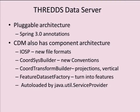The Threads data server uses a pluggable architecture with Spring 3.0 annotations, meaning you can drop in your own web services that use this framework without needing to change or fork our code. CDM also has plug-in components: IOSPs, coordinate system builders, coordinate transforms, and feature types. Using Java SPI — service provider — you just put metadata in your jar file, drop the jar inside the war, and the class loader finds and automatically loads your components.